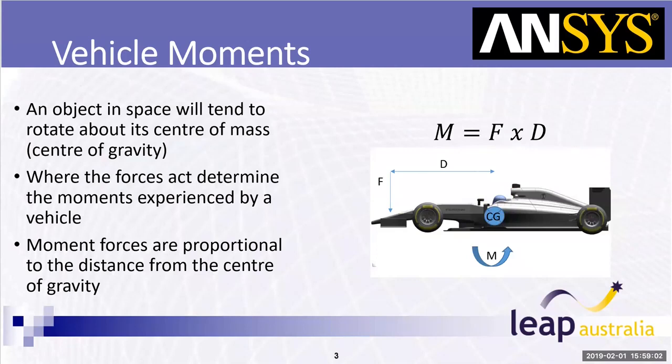An object in space will tend to rotate about its centre of gravity, and where the forces act determine the moments experienced by the vehicle. As you can see in the image, the force is acting on the front wing, pushing the nose down — so it's creating a pitching down force.